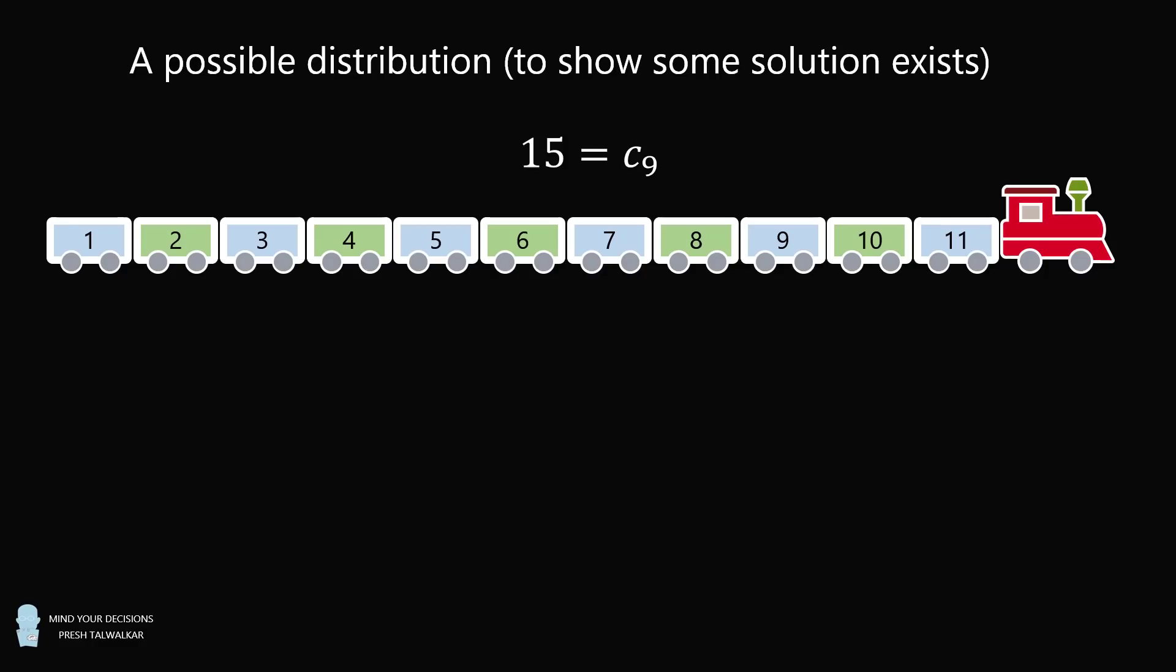We know that C9 = 15. And for symmetrical reasons, C3 = 15. So we'll put these two quantities down.